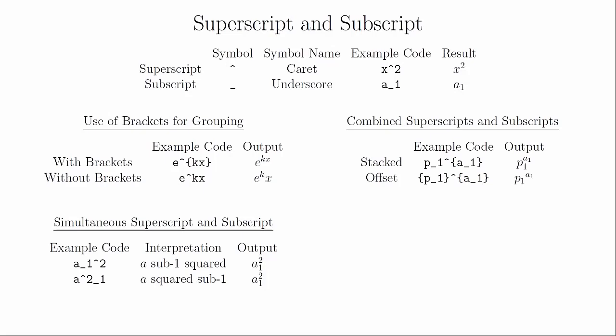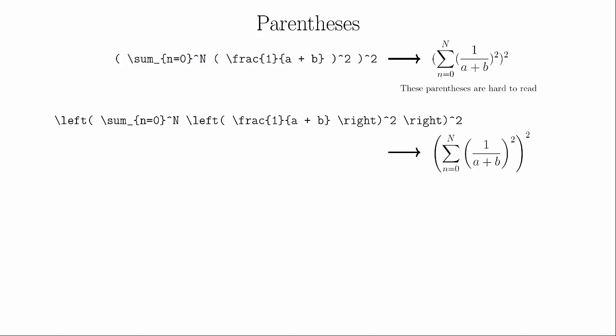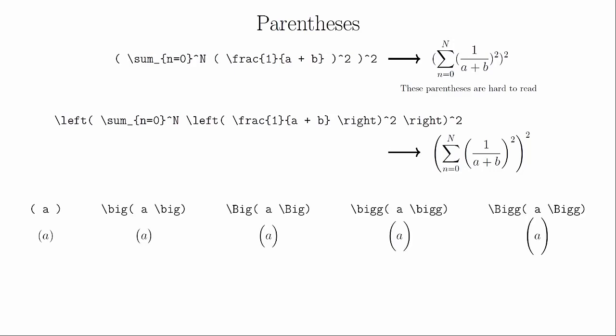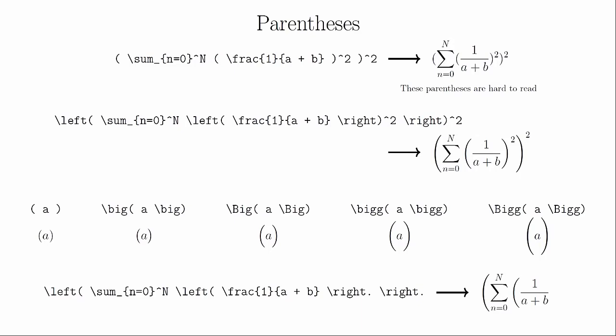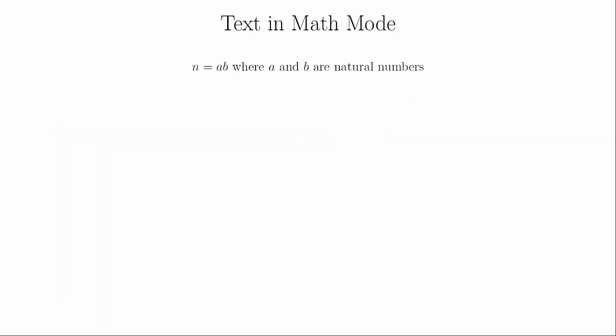You also have the ability of stacking superscripts and subscripts together for more complex notation, and you can impact exactly how this looks by using brackets to group different parts together. You can use the standard parentheses and square brackets available on the keyboard, but they can sometimes be the wrong size. You can let LaTeX choose the size of your brackets by using \left and \right with your brackets, or you can manually choose the size using one of four modifiers. If you use \left and \right, these must always come in pairs. If you only need a symbol on one side, you can create a blank symbol by using \left. or \right.